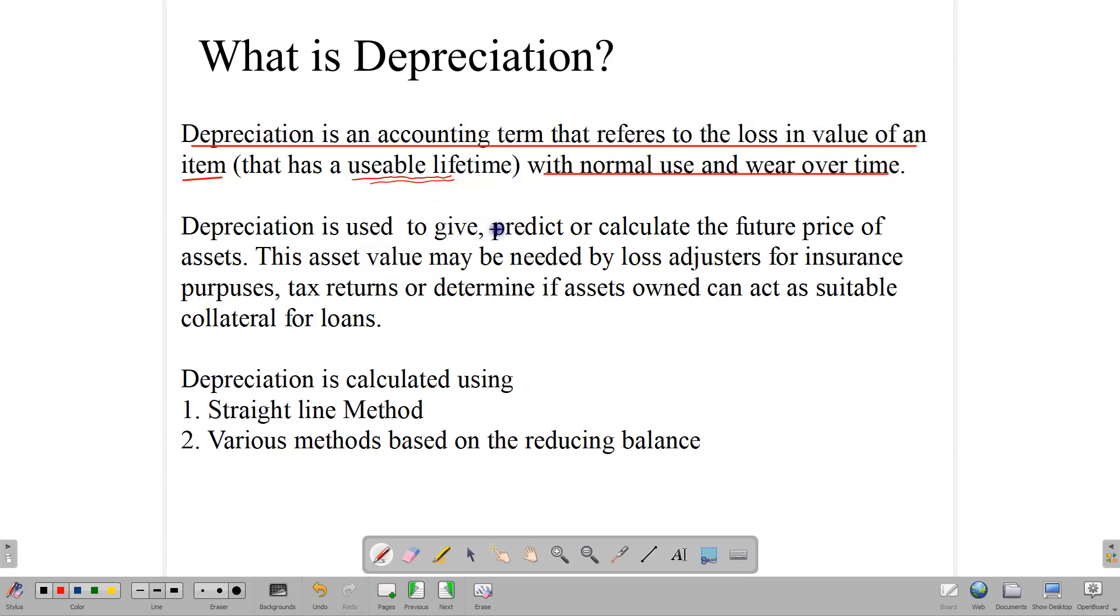Depreciation is used to give, predict, or calculate the future price of assets. Now, why is this important? The asset price may be needed by loss adjusters for insurance purposes, or to file tax returns, or to determine if the assets that you own—the car, the fridge, the TV—can be used as collateral for loans.